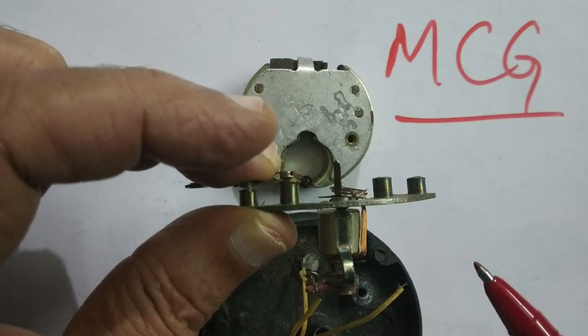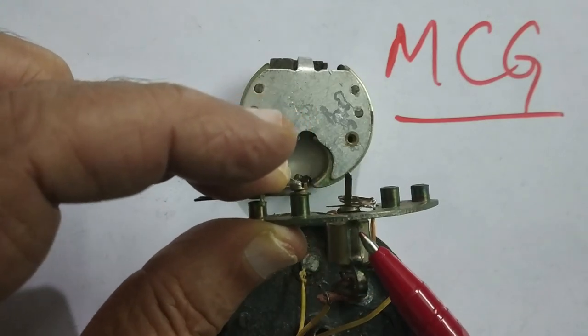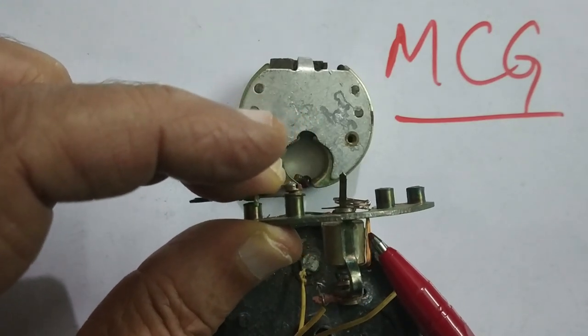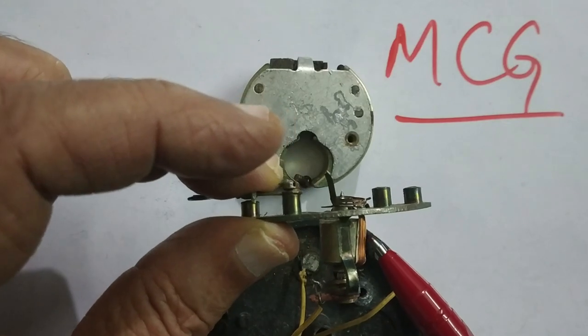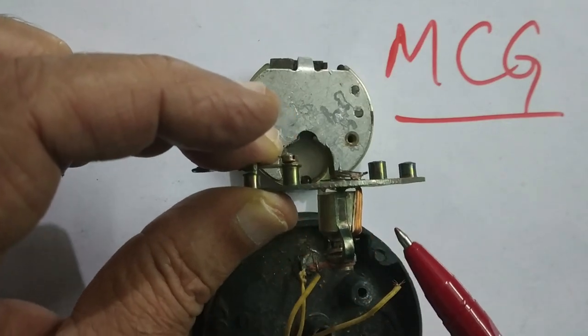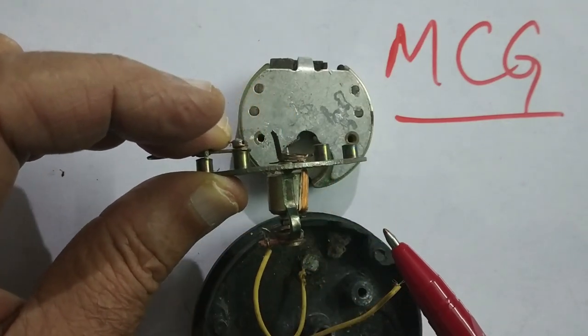When galvanometer is attached in any circuit between two points, the current will pass through the rectangular coil. So, the rectangular coil is rotated.